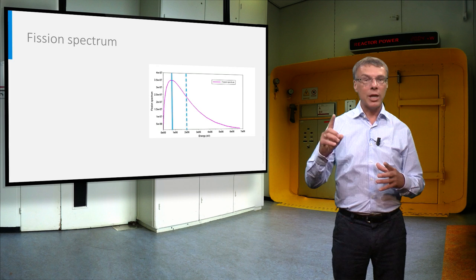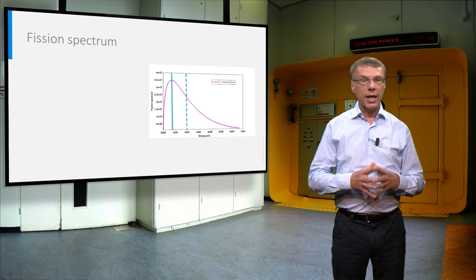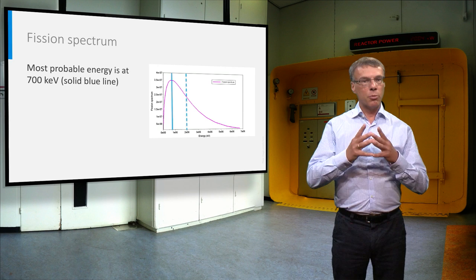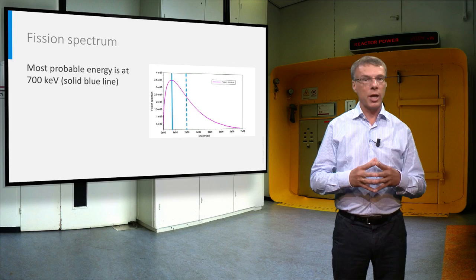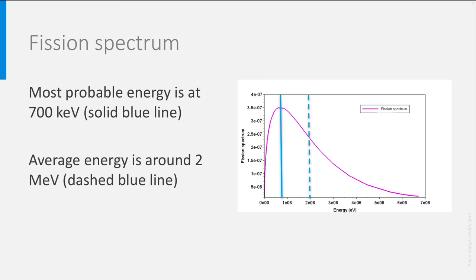But first we have to explain the characteristics of fission neutrons. This plot shows the energy distribution of the neutrons when they are released in a fission event. The most probable energy is at around 700 keV, while the average energy reaches a value of about 2 MeV.